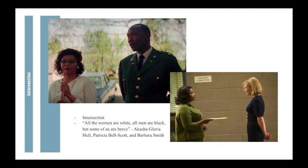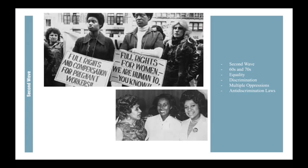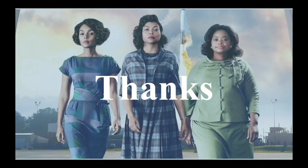In Hidden Figures, the women face sexism from black men and racism from their white co-workers. The time period of Hidden Figures covers the second wave of feminism, which focused on equality and discrimination. The first wave of the movement prioritized white women, but the second wave focused on theories regarding multiple oppressions and coined the term intersectionality. It also worked to create anti-discrimination laws. Although race and gender are socially constructed, they play a major role in society. Hidden Figures highlights how both gender and race affect one's life, but most importantly highlights the accomplishments of Katherine Johnson, Dorothy Vaughn, Mary Jackson, and other black women that went unnoticed in NASA's role in the space race.